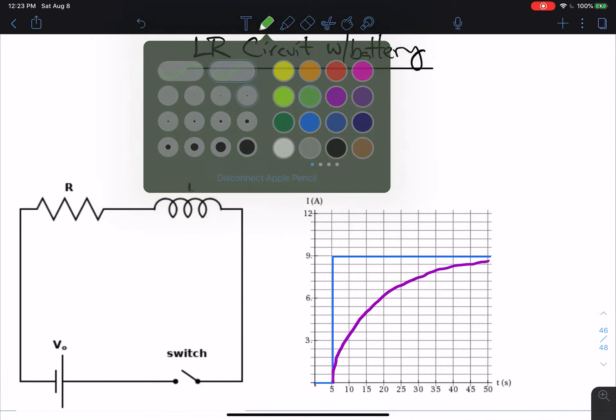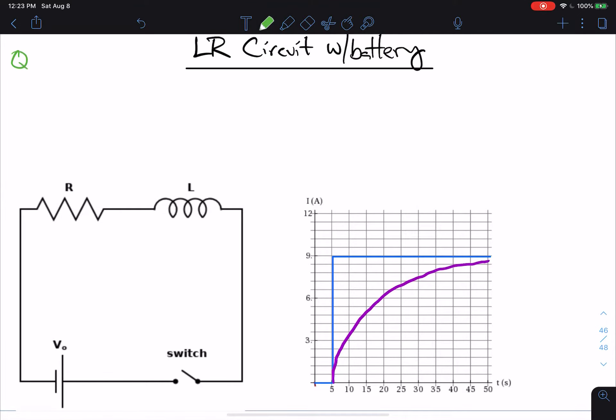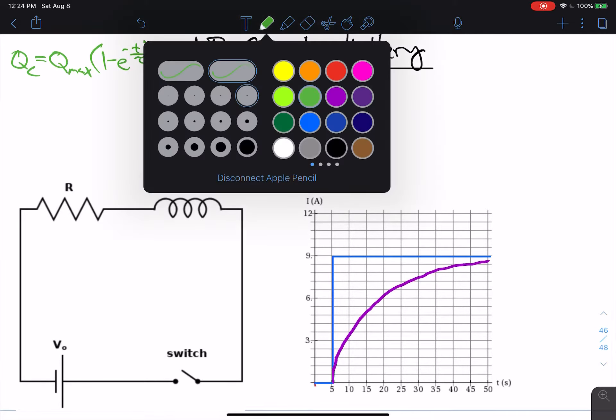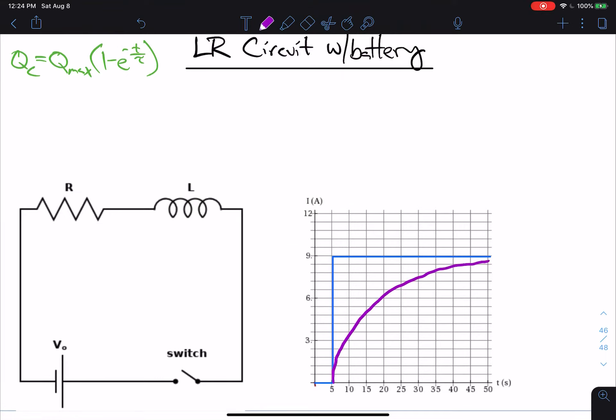Recall that for the RC circuit, if we were talking about the charge on the capacitor, we had Q max, one minus e to the negative t over tau. We had that kind of asymptotic behavior. We have the same behavior here, but of course we're talking about the LR circuit. And so for the LR circuit, the behavior is I equals I max, one minus e to the negative t over tau. So that is how the current behaves in an LR circuit.